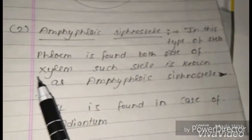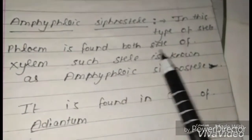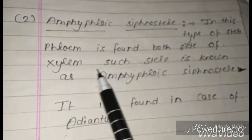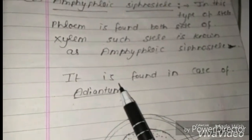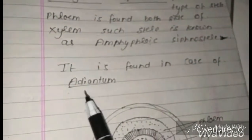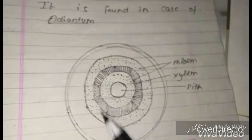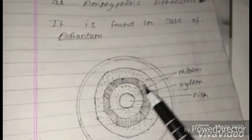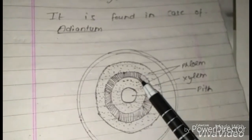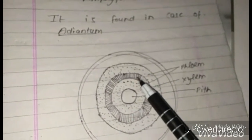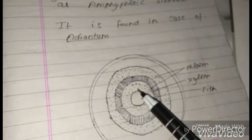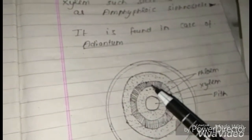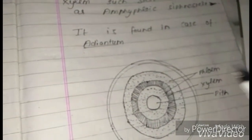Amphiphloic siphonostele: in this type of stele, phloem is found on both sides of xylem. It means xylem is present between phloem on both sides. It is found in Adiantum. Here is the figure of amphiphloic siphonostele. Thank you friends, that's all — please like and subscribe this video.